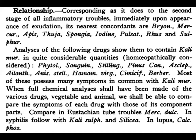Analysis of the following drugs shows them to contain Kali Muri in quite considerable quantities, homeopathically considered. Kali Muri is present in Phytolacca, Sanguinaria, Stylingia, Pinus Canadensis, Asclepias, Elaeanthus, Anistilata, Hamamelis Virginica, Tindisipiva, and Berberis Vulgaris. All these remedies contain Kali Muriaticum, which explains the close relationship between their symptom pictures.